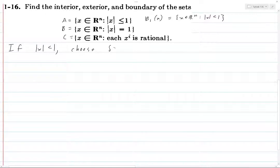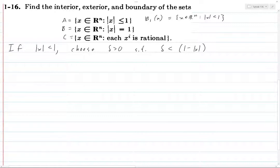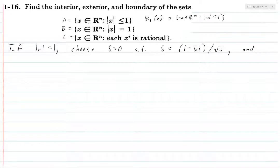Choose delta greater than zero such that delta is less than one minus the norm of x, divided by the square root of n. This is a positive number because the norm of x is less than one. This pattern — taking some distance and dividing by the square root of n — will come up a lot in these exercises. I've worked backwards to find it.